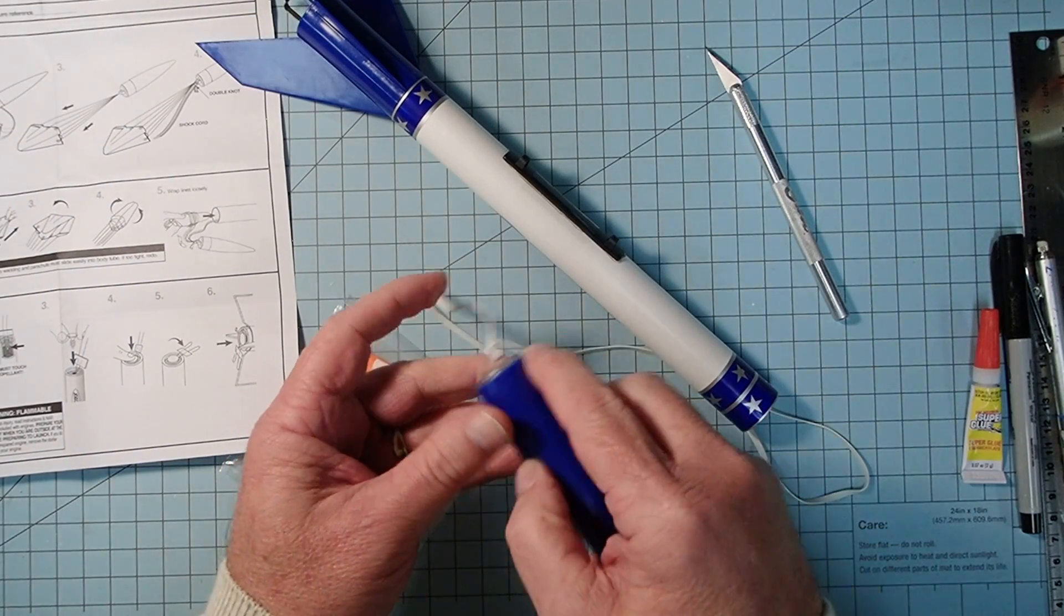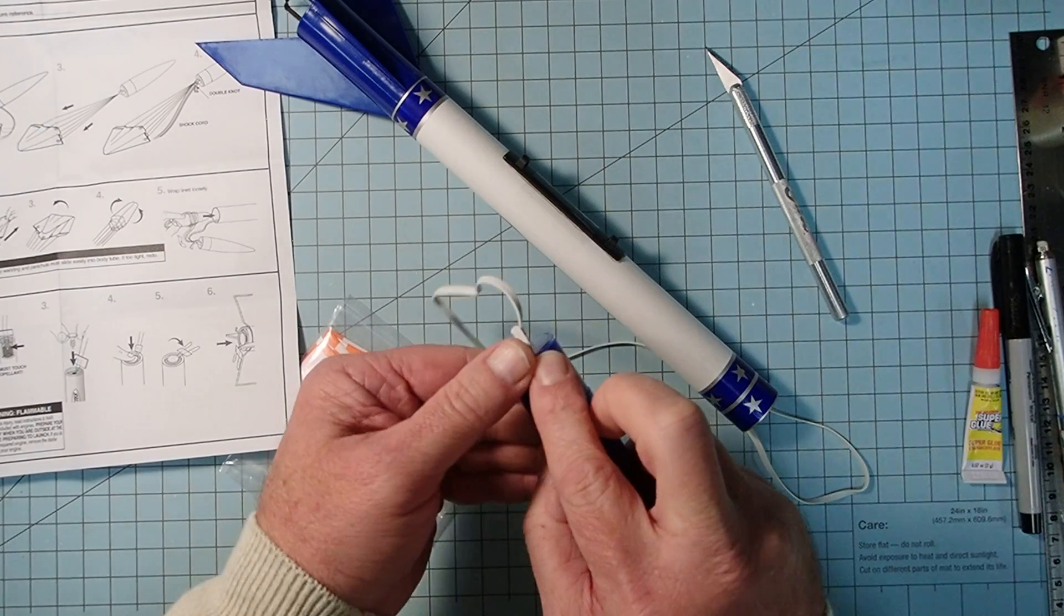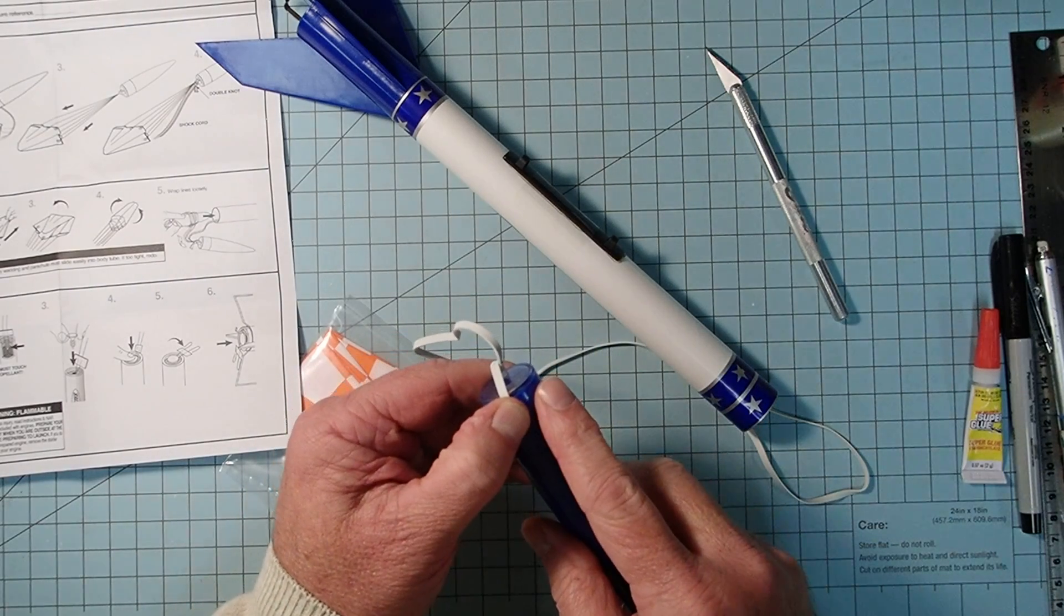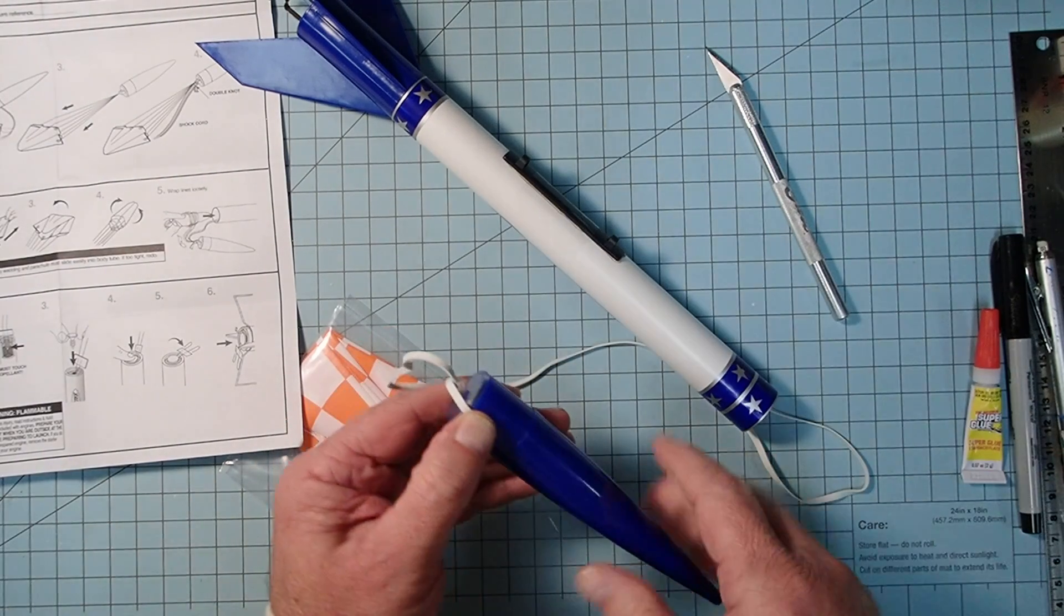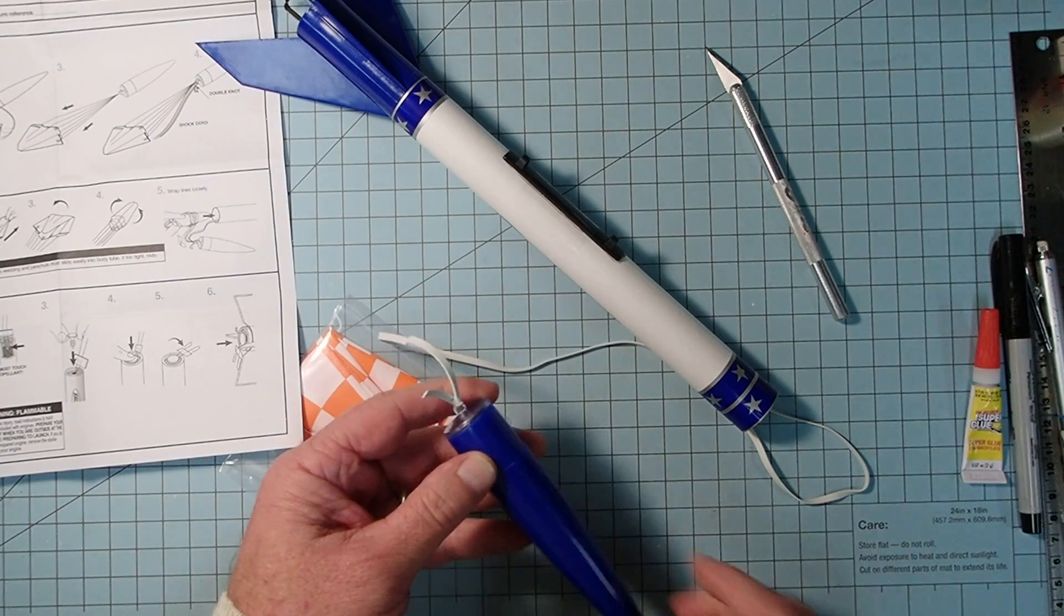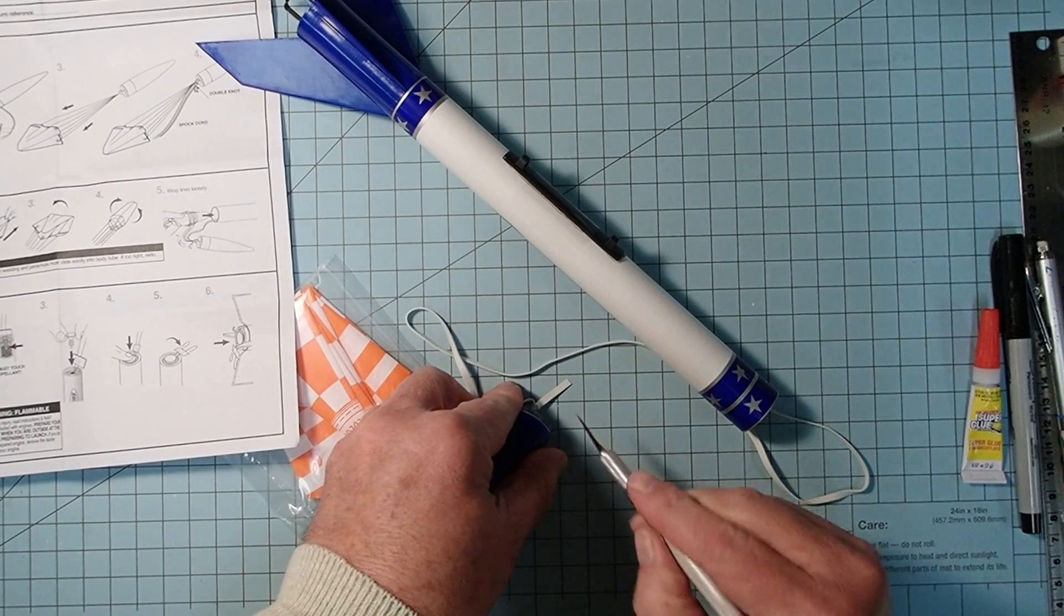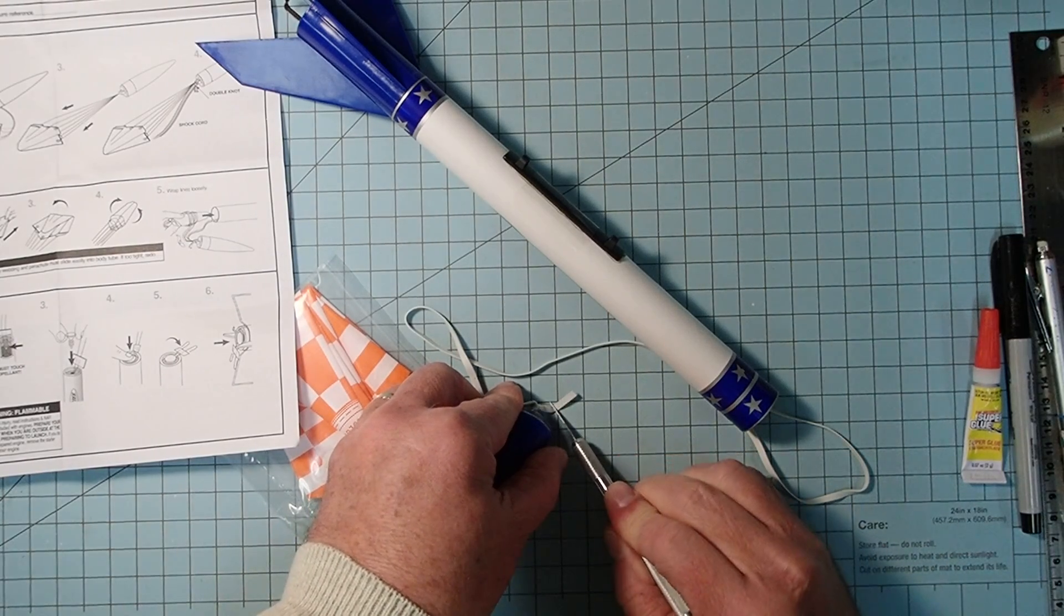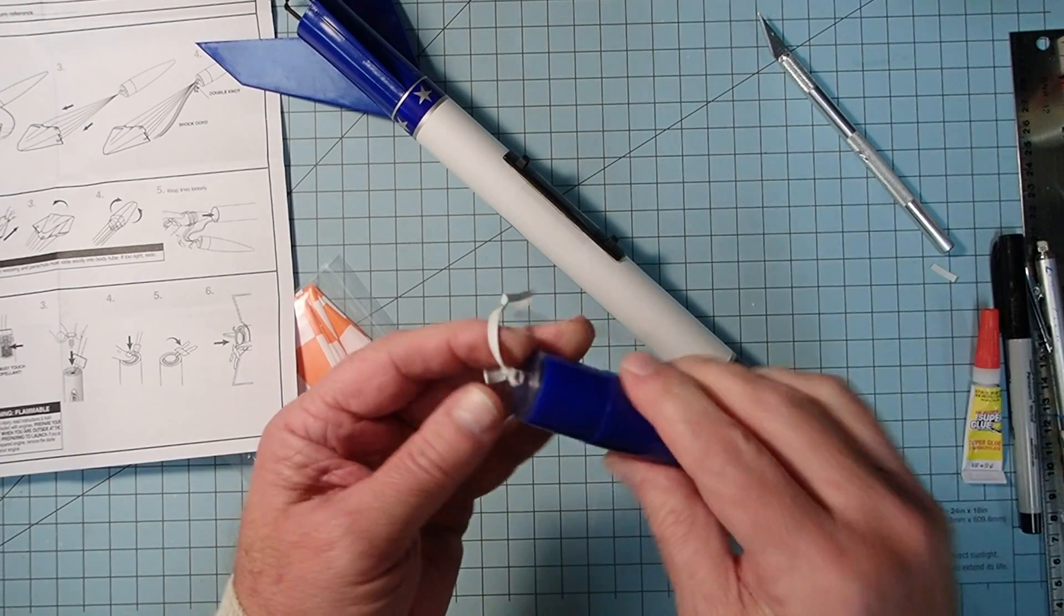And what can happen is when we go to put the nose cone onto the end of the body tube here, this can get caught up in between the shoulder of the nose cone and the body tube. And what can happen there is when the rocket goes to eject the parachute, this can get stuck, and the rocket will come down like a dart instead of on its parachute. So the first thing I would do here is cut this back to about six millimeters or about a quarter of an inch. We don't want it all the way back at the knot.